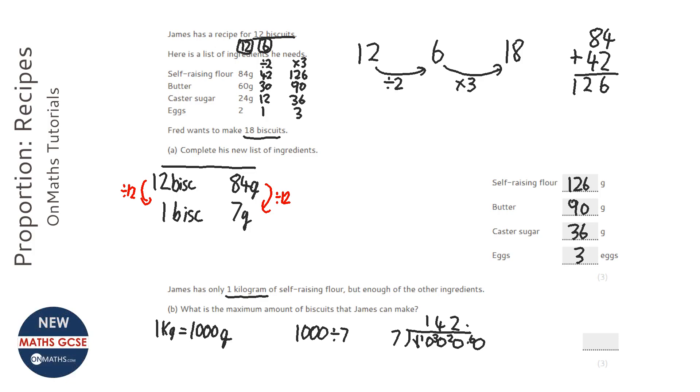But actually it just shows us that we've got 142 whole biscuits and then some biscuits left over at the end. So we're only interested in how many biscuits he can actually make, which would be 142, but he might have like some flour left over, but you wouldn't make a biscuit. So the answer is 142.